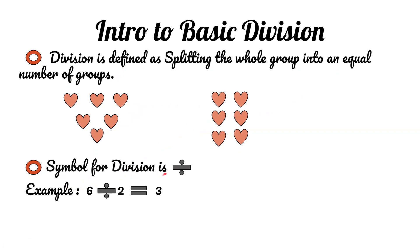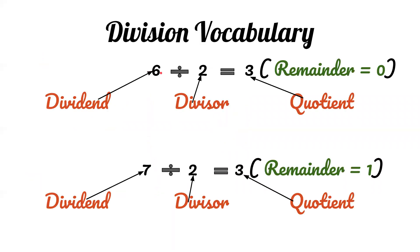The symbol for division is a small horizontal line with one dot above and one dot below. An example of a division problem is 6 divided by 2 equals 3.